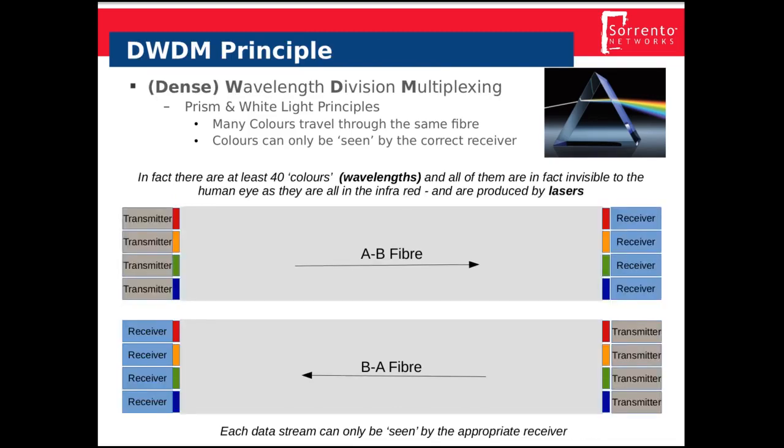In reality, we don't use torches or men — the transmitters are lasers and the receivers are usually photodiodes, controlled by electronics. But aside from that, the principle is exactly the same. In fact, all these colours are in the infrared, meaning you can't actually see them with the human eye. The red signal goes to the red receiver, the green signal goes to the green receiver, and so on.